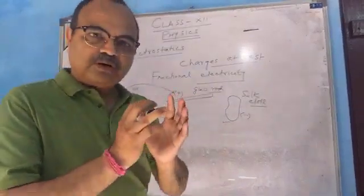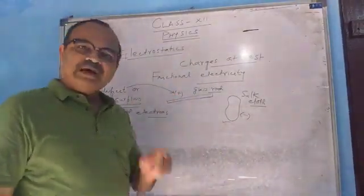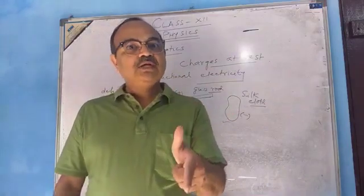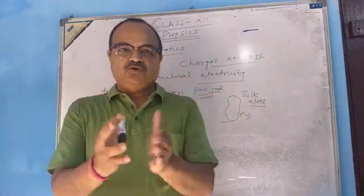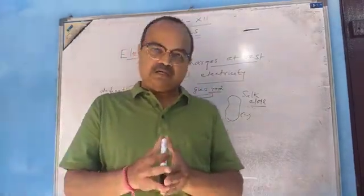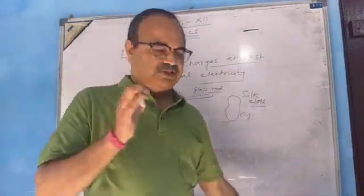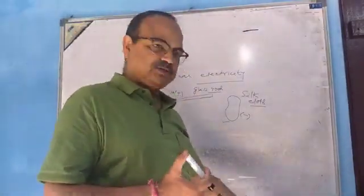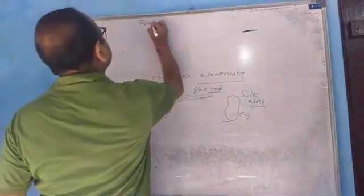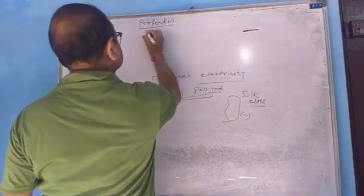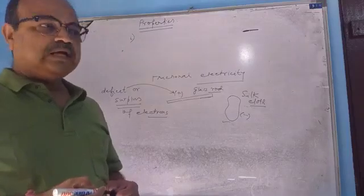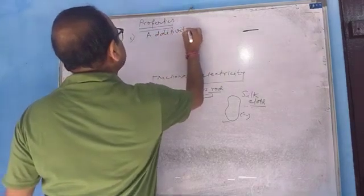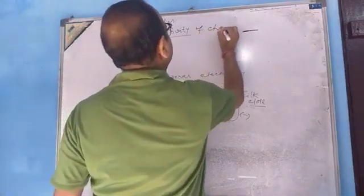Let us now discuss some important properties of charges. Number one: the first property is called the additivity of charges. What does it mean? As we know from Class 11, charge is a scalar quantity. So if a number of charges are present in a system, the total charge of the system is always the algebraic sum of all the charges.